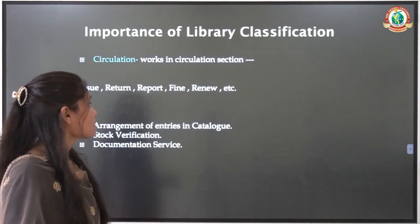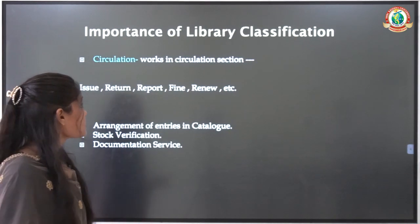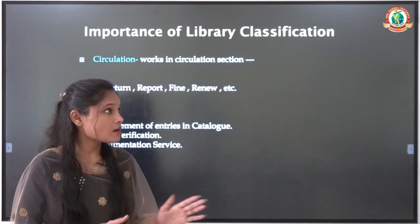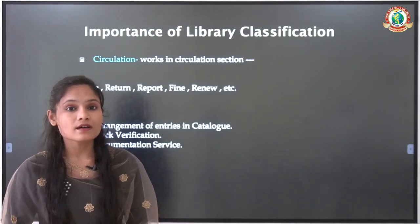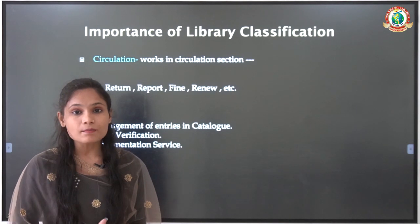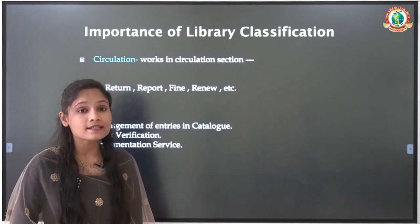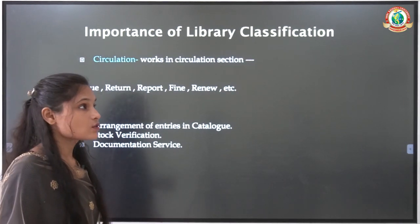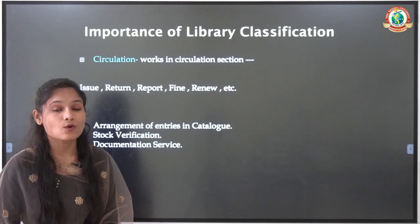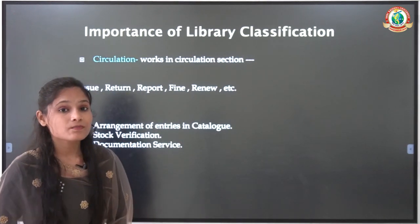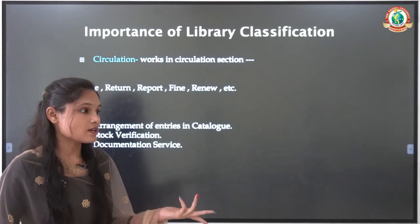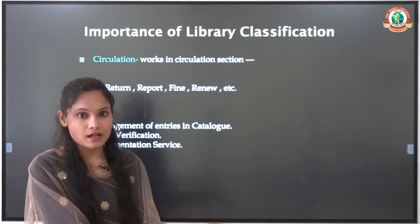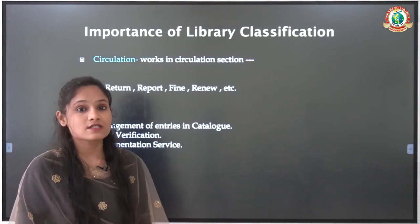Now, what is the importance of library classification? In the circulation section, there are different works: issuing, returning, making reports, fines, and renewals. If the library's collection is arranged in a proper manner — such as subject-wise, according to call numbers, or author-name or title — then issuing and returning will become very easy, making reports will be much easier, and renewals will be simpler, because if we know where a book is, we can quickly take it and issue it to the student.